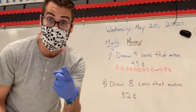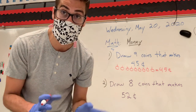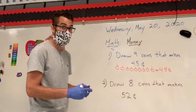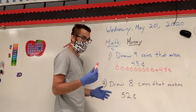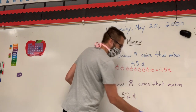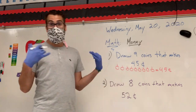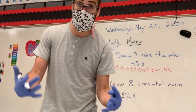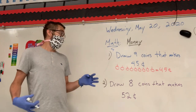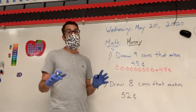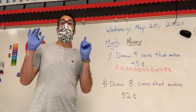Is this the one you did? Great. Now let's see the other way that you could have done. I'm going to use a different color — black — so we don't get confused. I'm going to draw again nine coins that make 45 cents, but now I'm going to start with the dime.